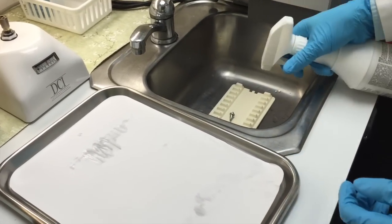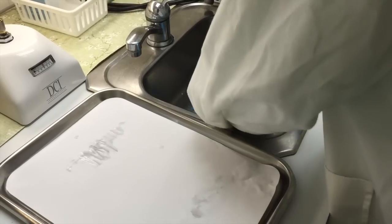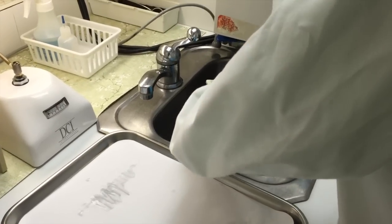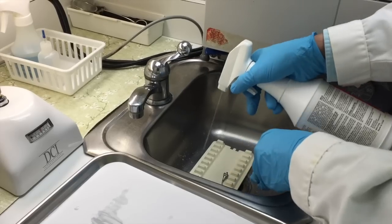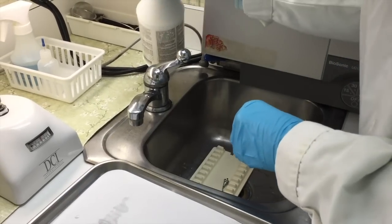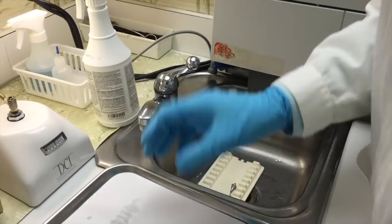We're going to take a surface disinfectant and thoroughly spray this down. Make sure you get both sides of the tray. We're going to let that sit on there for just a minute. While that's sitting there, we'll get rid of the paper.